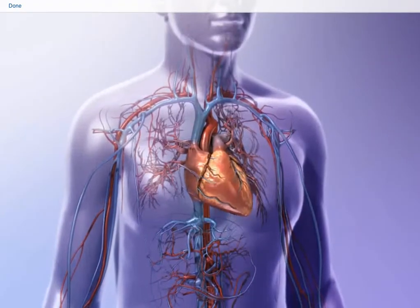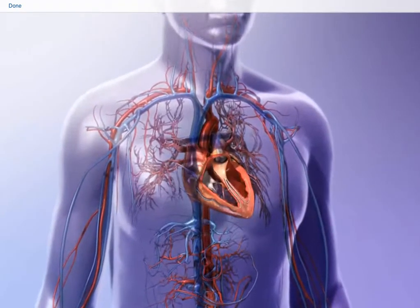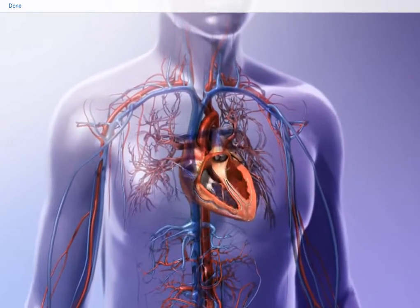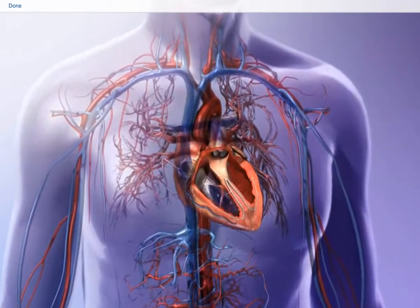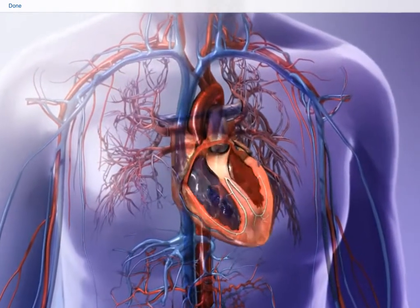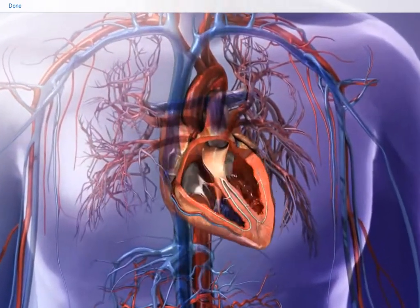With each contraction of the ventricles, blood is pumped out of the heart. Stroke volume is the amount of blood a ventricle pumps out in one contraction. Cardiac output is the volume of blood that each ventricle ejects every minute.